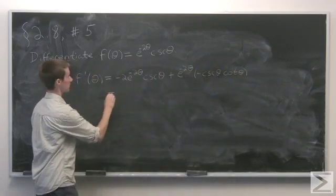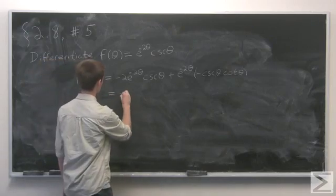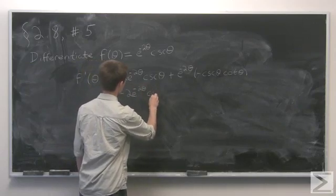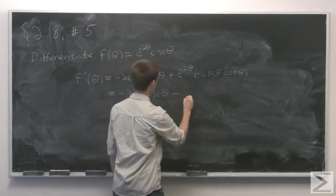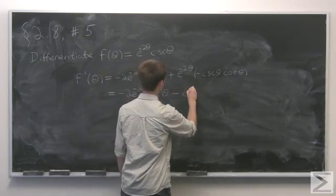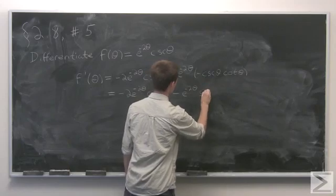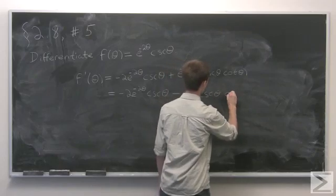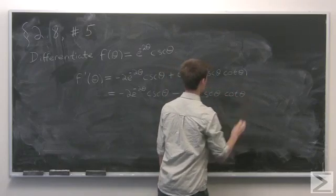We see that simplifying this, we find that the derivative is negative 2 e to the minus 2 theta cosecant theta, cotangent theta, minus e to the negative 2 theta cosecant theta cotangent theta.